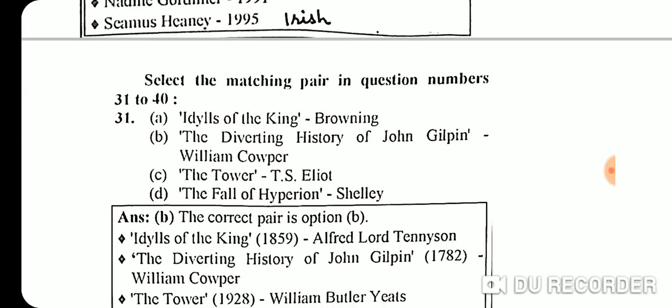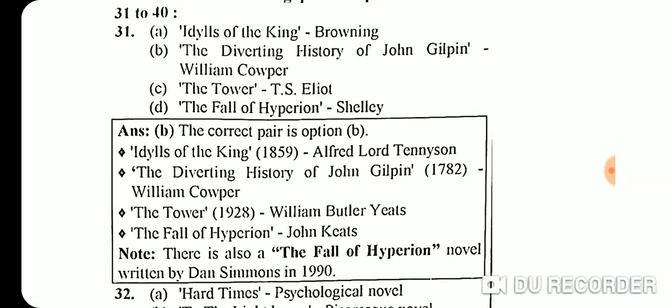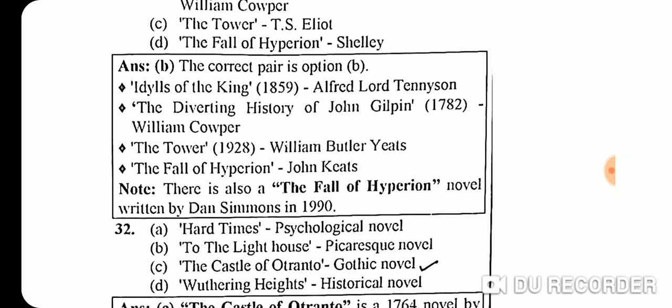Questions 31-40 are match-the-column questions. Question 31 correct pair: 'The Diverting History of John Gilpin' by William Cowper (1782); 'Idylls of the King' by Alfred Lord Tennyson; 'The Tower' by W.B. Yeats; 'The Fall of Hyperion' by John Keats.